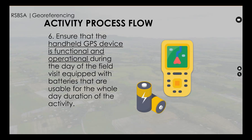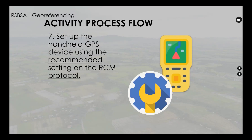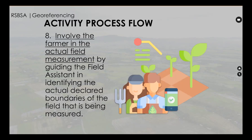Activity process flow number six: ensure that the handheld GPS device is functional and operational during the day of the field visit, equipped with batteries usable for the whole day's duration. Number seven: set up the handheld GPS device using the recommended settings on the RCM protocol.